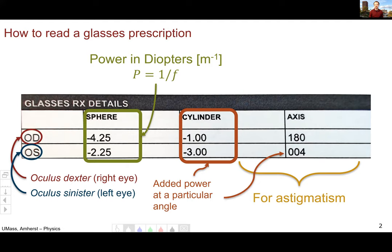And so you can see here that this person actually has both eyes are astigmatic, and along different angles.